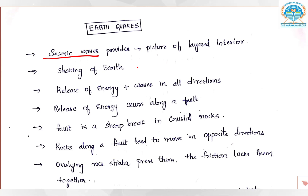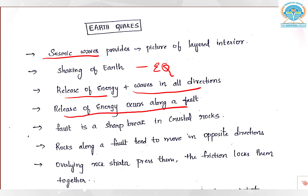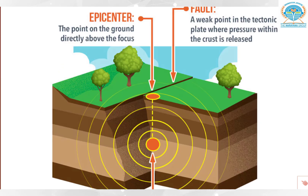Now what is an earthquake? In layman terms, it is a violent shaking of the earth where release of energy happens and waves travel in all directions. That release of energy occurs along a fault — a fault is nothing but a gap between two tectonic blocks. Let me explain all these points with the help of this picture.